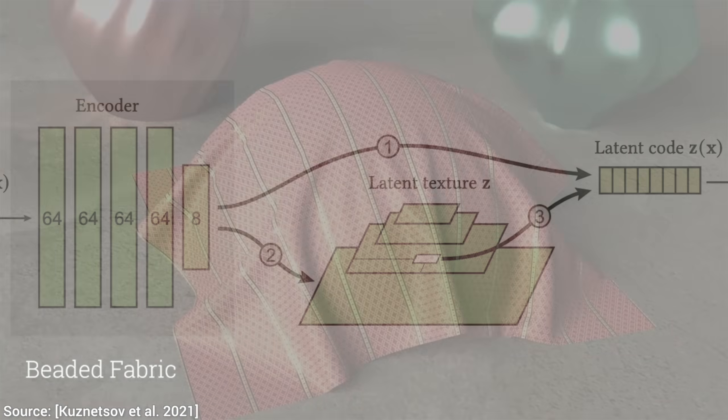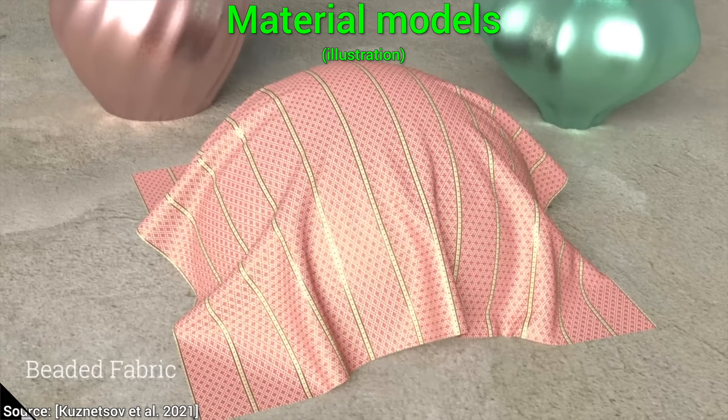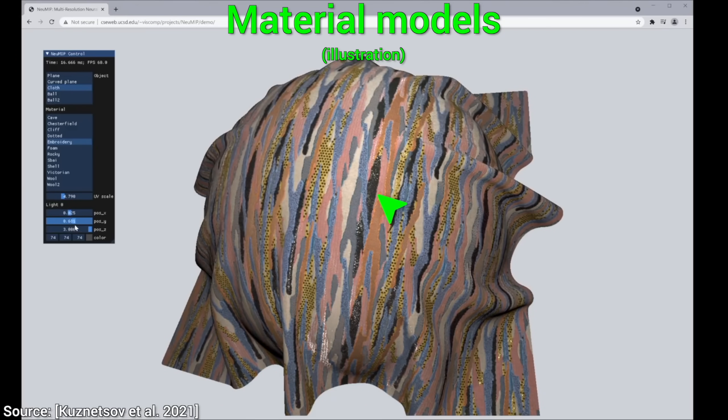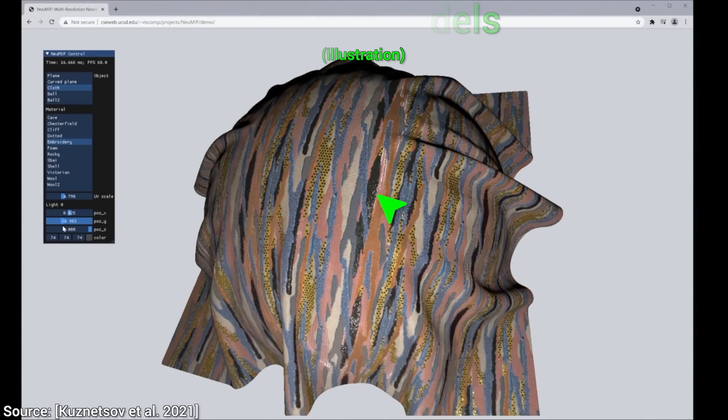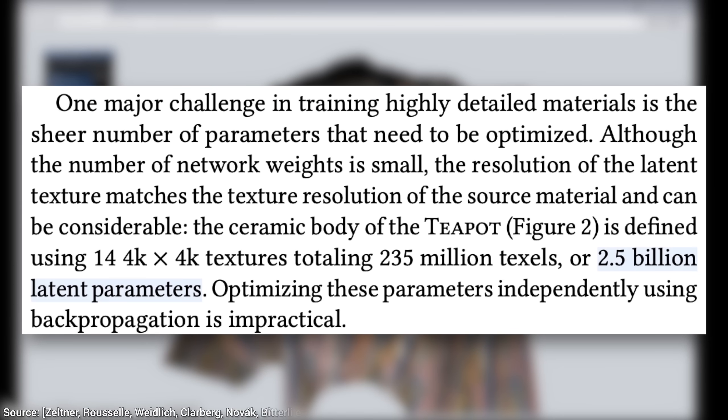very lightweight, presumably for quick training and running. We will have to look at that in a moment. However, it is compressing an enormous amount of data, that is, 2.5 billion latent parameters.